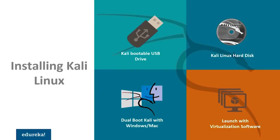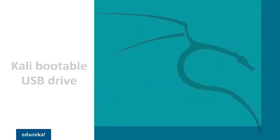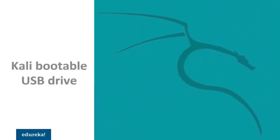In today's session, we will explore different ways to install Kali Linux. Earlier, I said that the fastest method for setting up Kali Linux is to run it live from a USB drive. But why? First of all, it's non-destructive — it makes no changes to the host system's hard drive or the operating system installed on it. So once you remove the USB, your operating system will return to its original state.